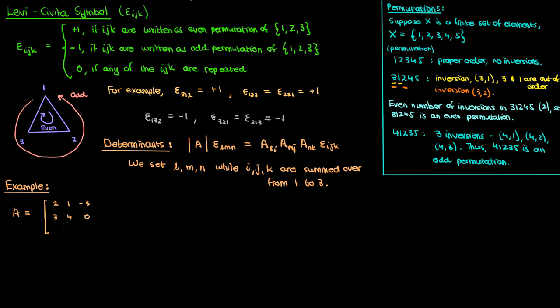So let's do an example involving a determinant calculation. Suppose I have a 3x3 matrix A given by the following. According to this formula up here, we can find the determinant of A using the following equation. Remember that the indices L, M, and N are numbers that we set ourselves, while the Ij and K are summed over from 1 to 3. So just to make things simple, let's set the L, M, and N to be 1, 2, and 3 respectively.